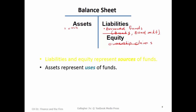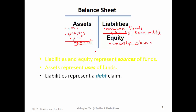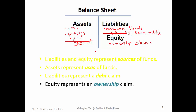So we have operating assets like plant and equipment that are unique to the business. If I'm running a lawn mower business, my equipment is trucks and mowers and all my mowing tools. I want to have that out there working as much as possible — earning revenue to either pay off liabilities or build equity as we retain profits. Liabilities represent a debt claim — money we owe. Equity represents an ownership claim.